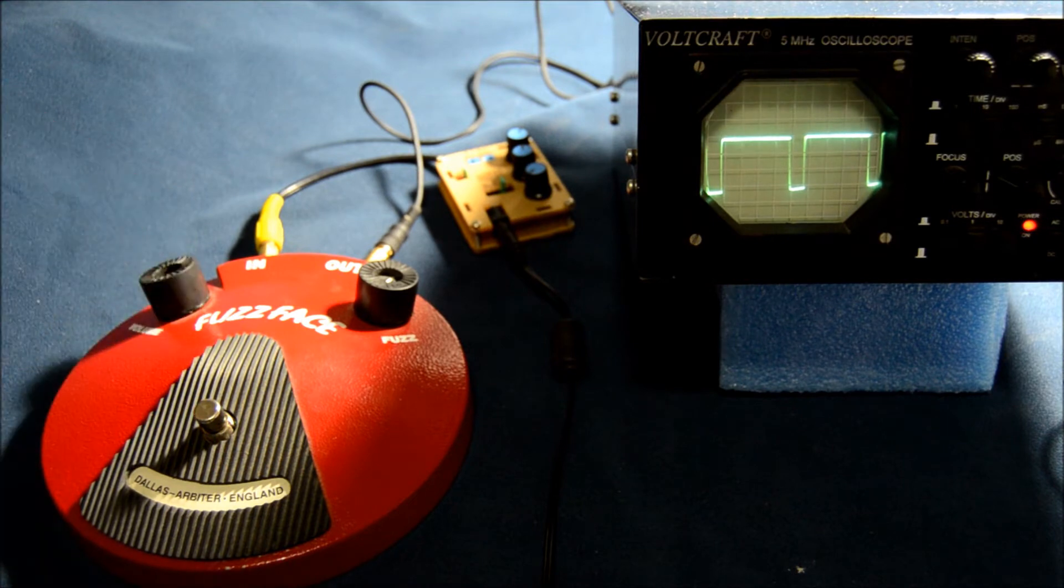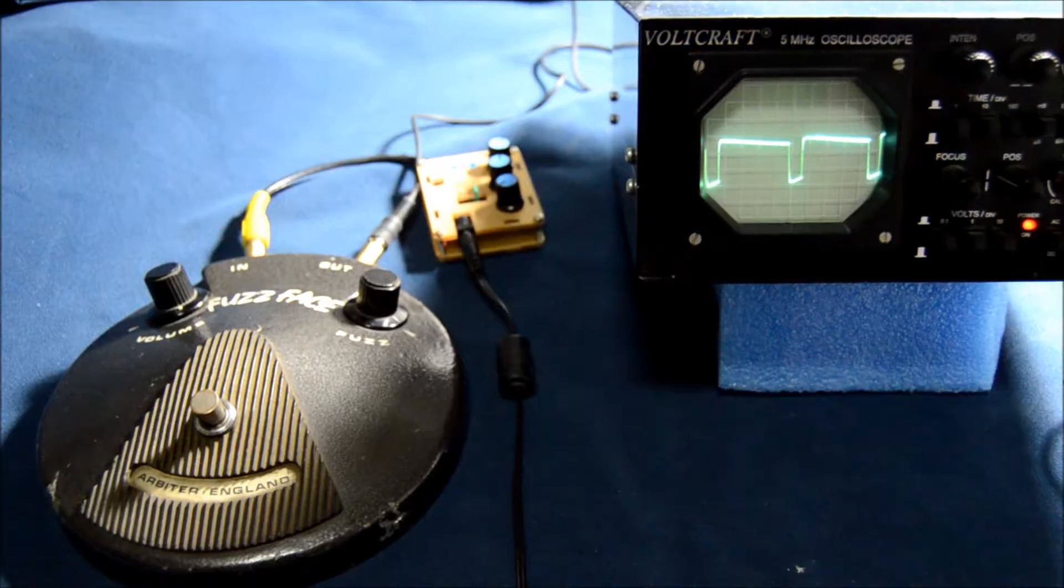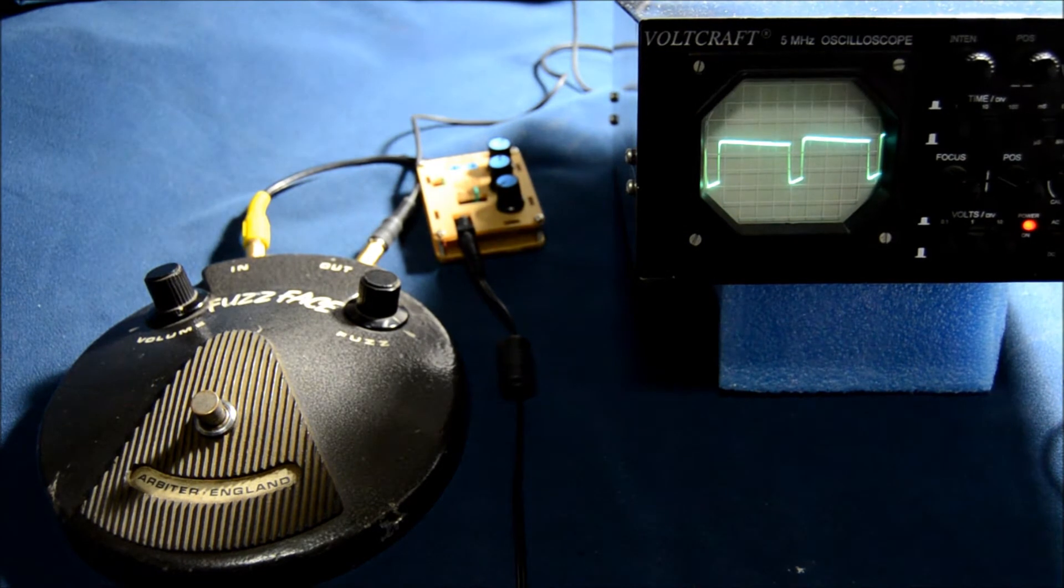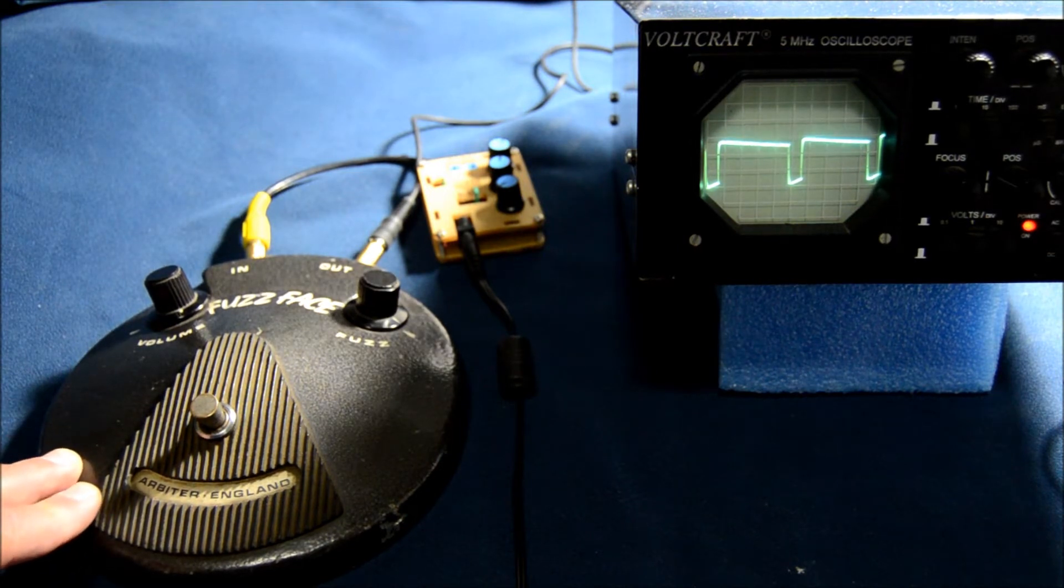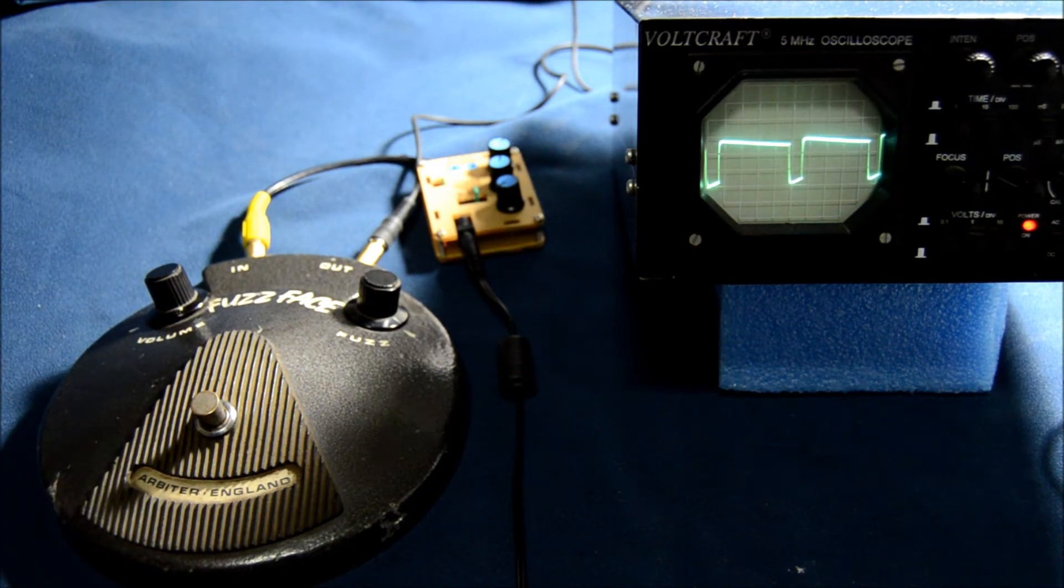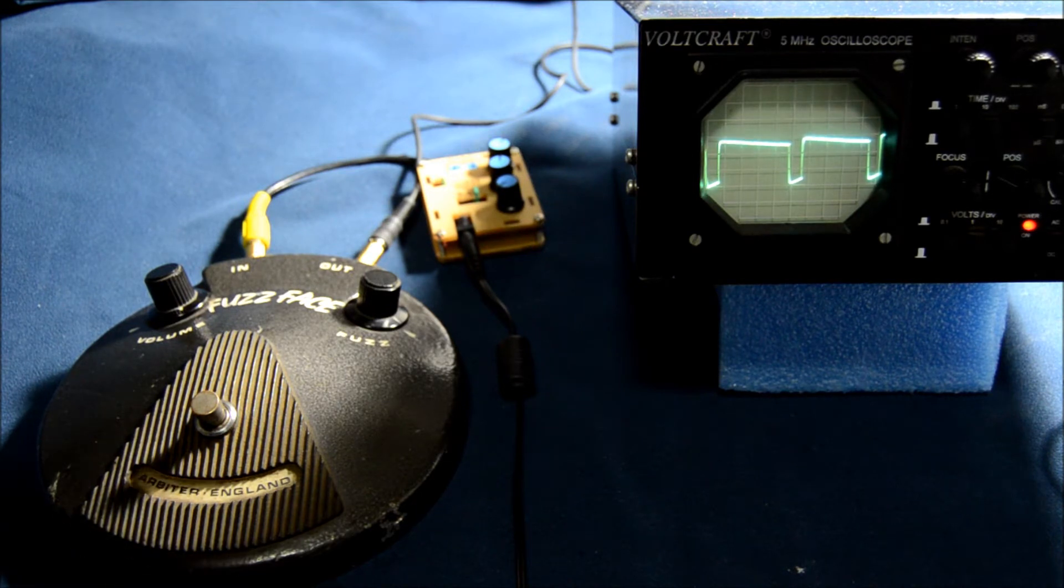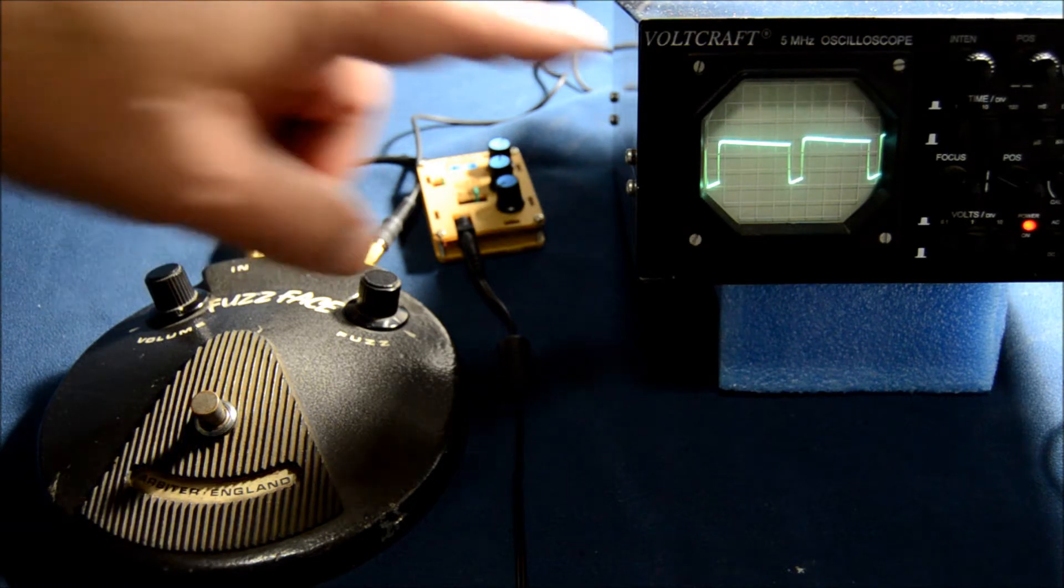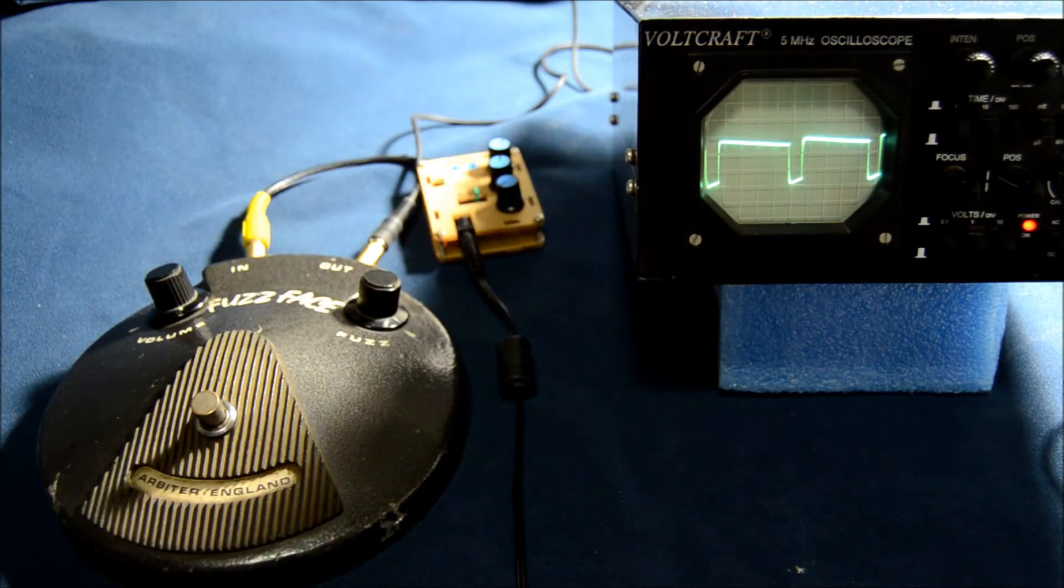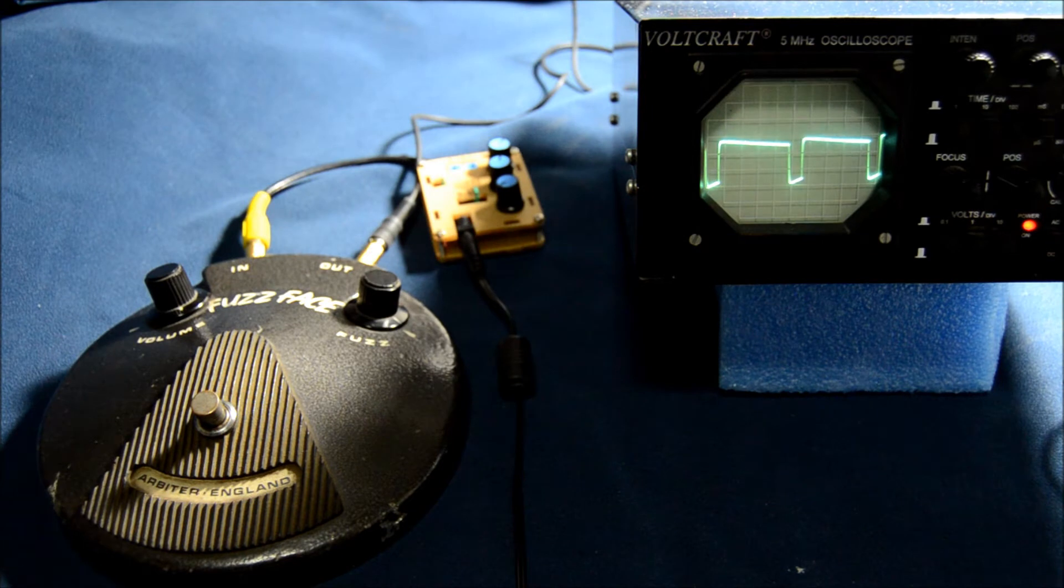Now, a little magic. Here it is, I've turned this fuzz face - it was a 1990s reissue - I turned it into an original one. This is the '67 with the original NKT 275 transistors. We see that this square wave is not exactly the same. It has some slope here and there. Maybe this could be the difference between the vintage fuzz face and the newer one. It was interesting to see the difference between the two.